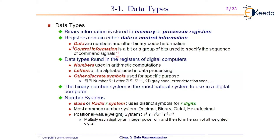Let us confine our discussion to just data and the types used in a computer system. The data types found in registers of digital computers are numbers, letters, and other discrete symbols.